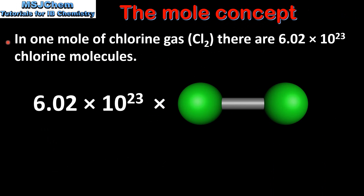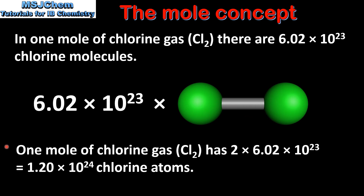Next we look at some examples using the mole concept. In one mole of chlorine gas, which is Cl₂, there are 6.02 times 10 to the power of 23 chlorine molecules. Chlorine gas exists as a diatomic molecule with two atoms of chlorine bonded by a single covalent bond. Therefore, in one mole of chlorine gas, there are two times the Avogadro constant number of chlorine atoms, giving us 1.20 times 10 to the power of 24 chlorine atoms.